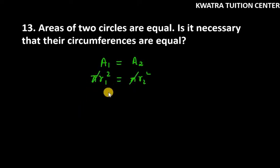Pi say, pi cancel ho gaya. So, you are left with r1 square and you are left with r2 square. So, this is what you have. Now, let's check if our circumference is equal or not. Now, square to square are comparable and we get r1 equal to r2.